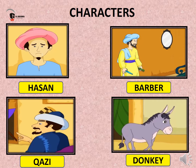Before moving on to our story, let me introduce to you the different characters. The first character is Hassan — a poor man who sells his pots and pans in the market. The second character is a barber, a person who cuts hair, and he was very cunning and clever. Next is Kazi, which means a judge. And our last character is a donkey, which belongs to Hassan.